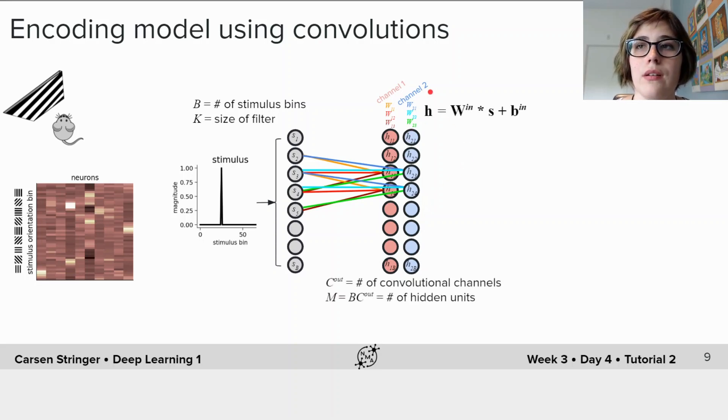We get our hidden layer h is going to be W^n, which in this case are these weights for these different channels, convolved with our stimulus s plus some bias term b.